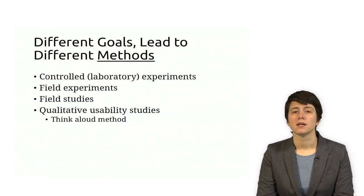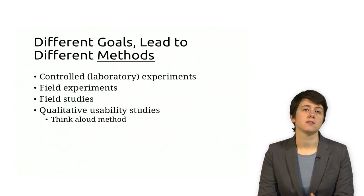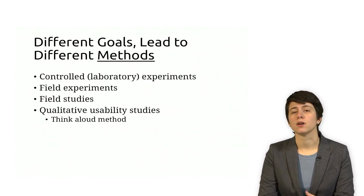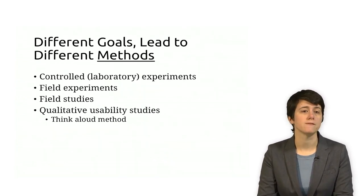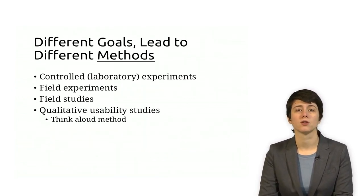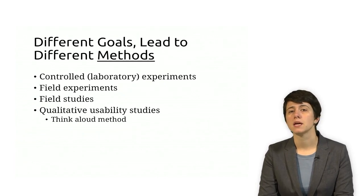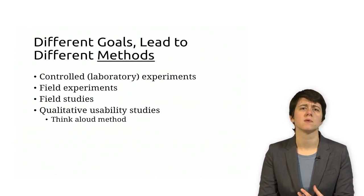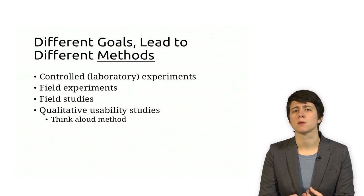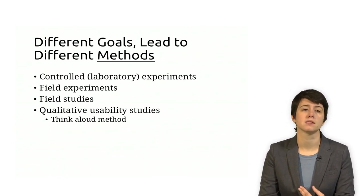Different goals lead to different methods used. So for example, sometimes when you want to prove something, you may want to do an experiment, whether it's a field experiment or a controlled experiment. If you want to understand more about potential issues with your system, you may want to do something more qualitative, such as a usability study or a think aloud method.